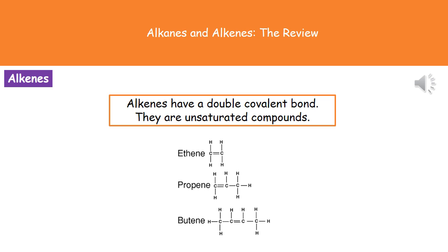When drawing displayed formulas for alkenes, the double bond must go between the carbon atoms. Remember, carbon can make 4 bonds but hydrogen can only make 1, so you could never have a double bond involving a hydrogen atom.